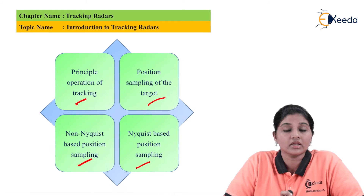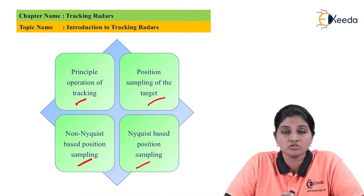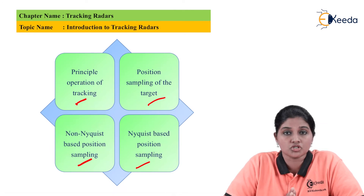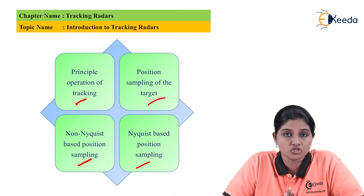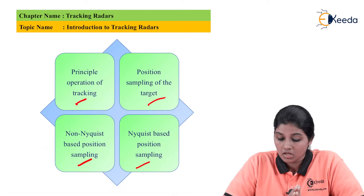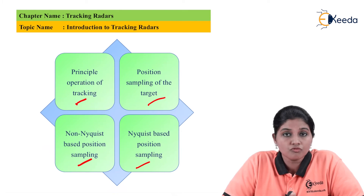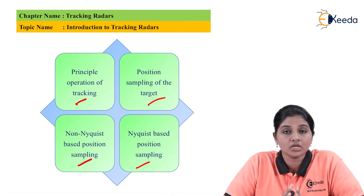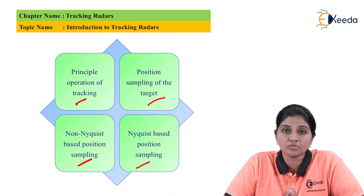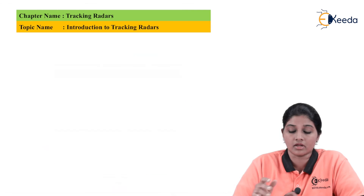In case of tracking radar, the path or location of the target is scanned continuously so that the user can get information about the position or actual location of the target.